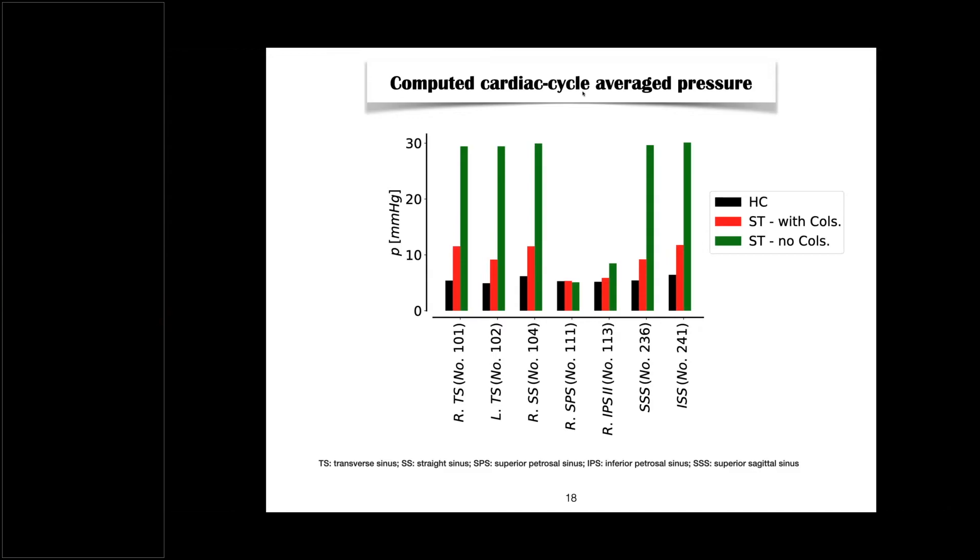So, what we see is the healthy control here, in black. And these are low pressures here. And then you see a situation in which the subject has fully active collaterals. Because when you have strictures in the venous system, the system will find ways around the strictures in order to flow, you know, to transport blood back to the heart, of course.